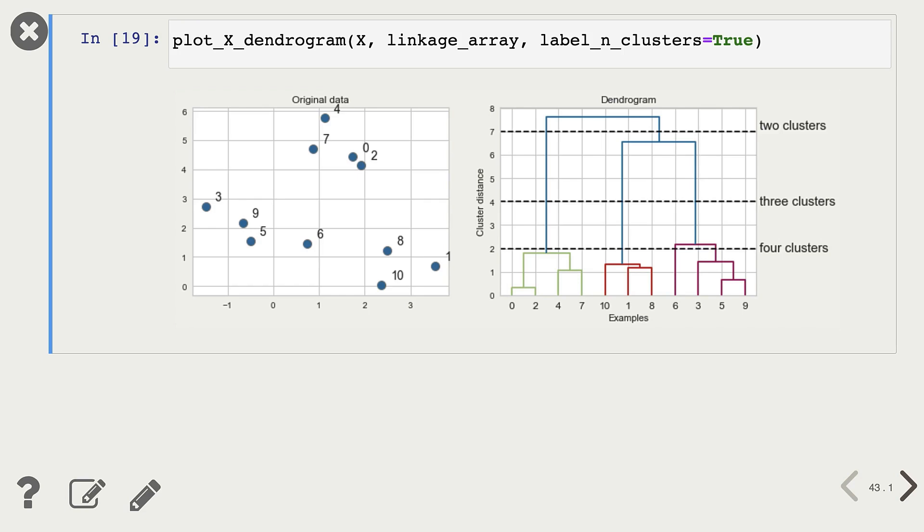If we take mean distance, then that will be our single linkage. If we take maximum distance between these clusters, when we calculate all these distances, that will be our complete linkage.